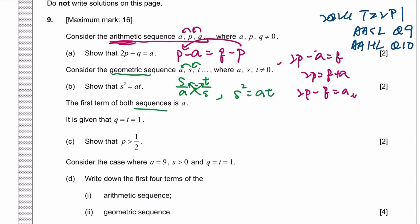You know what? Both sequences have the same first term, which is A. You're also given that both Q and T are 1. So P is bigger than half. So you're trying to find P. So from part A, what do we have? We have A being 2P minus Q, but Q is 1 now, so 2P minus 1.